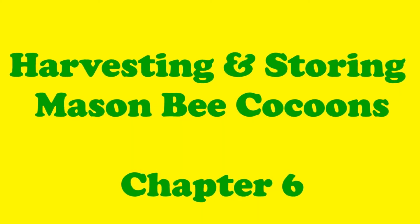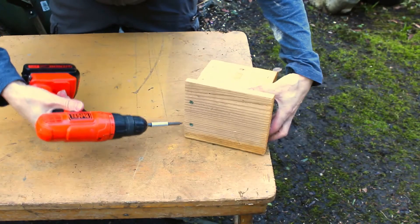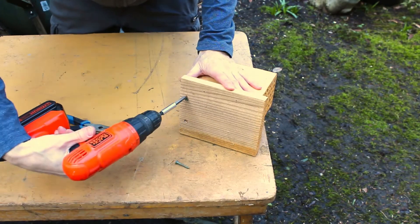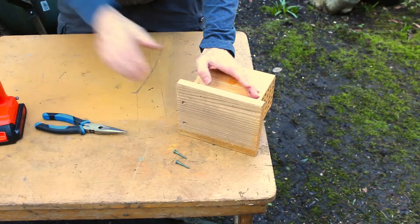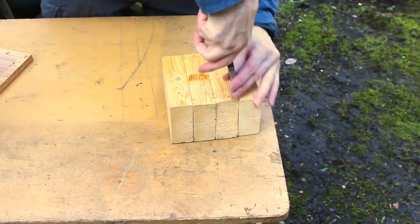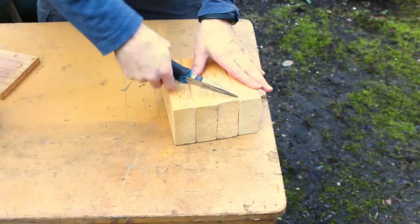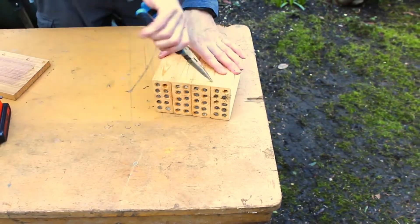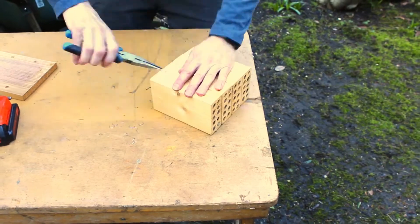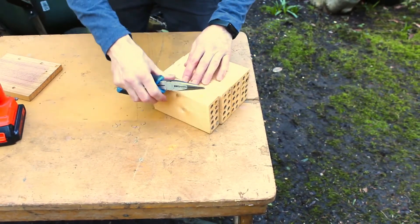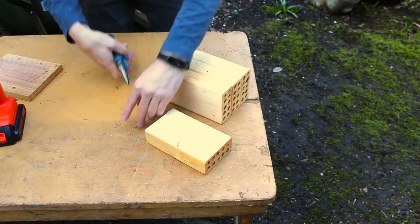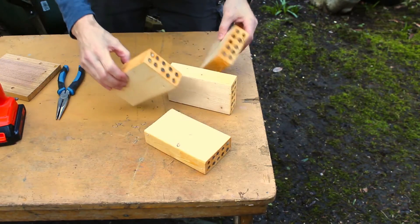Harvesting and storing mason bee cocoons. The best time to harvest mason bee cocoons is between October and November. This will ensure the bees have fully developed into adulthood and are already in their hibernation period. Giving the mason bees a variety of nesting options during the season will ensure the bees can find something they like. This bee house is made from simple two by four lumber with holes drilled inside.